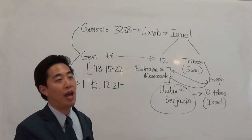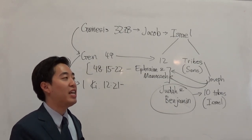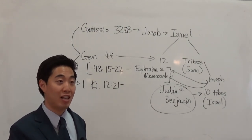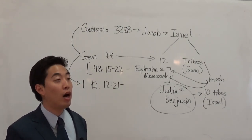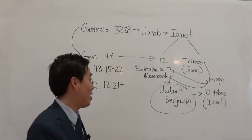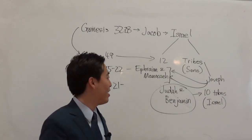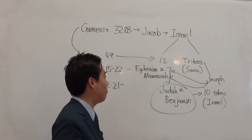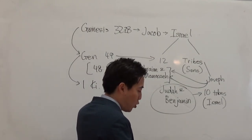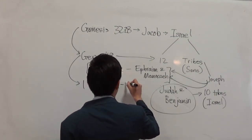Rehoboam, son of Solomon, increased taxation on the people, which caused a split like a civil war. Judah and Benjamin stayed faithful to Rehoboam, while the remaining 10 tribes broke away, wanting nothing to do with that arrangement.